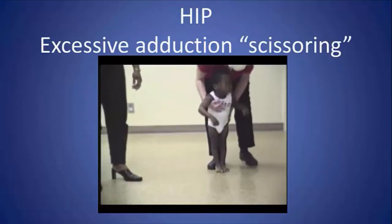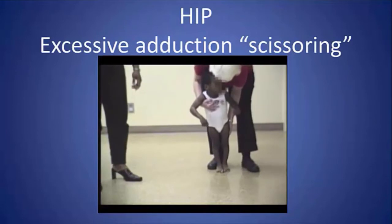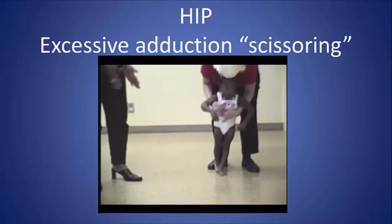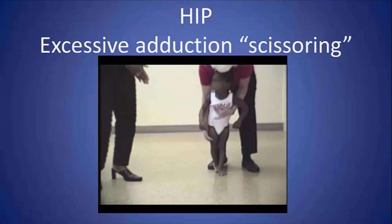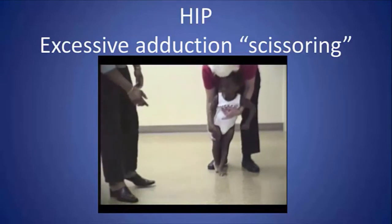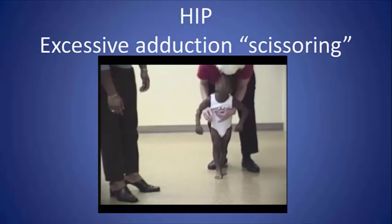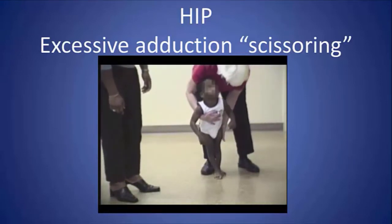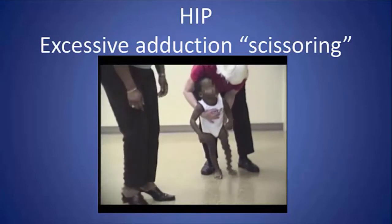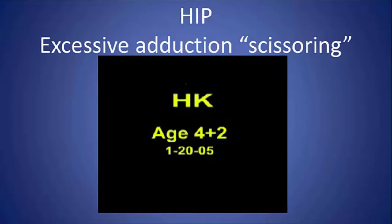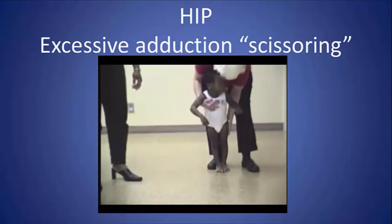In cerebral palsy patients, particularly diplegic patients who may have the potential to walk, they tend to have overactive adductors — working throughout the entire gait cycle and working excessively.